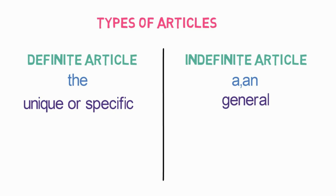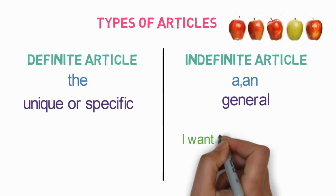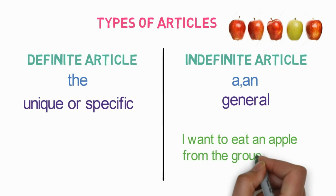Now let's look at an example to understand it better. Suppose there is a group of apples in front of you and you are given a choice to eat one of them. If you want to eat any one from the group, what will you say? You will say, 'I want to eat an apple from the group of apples.'